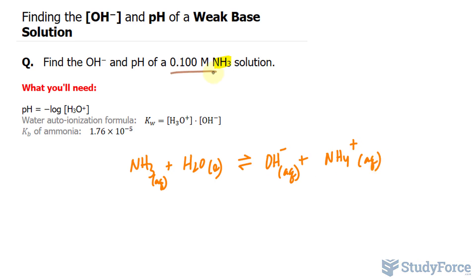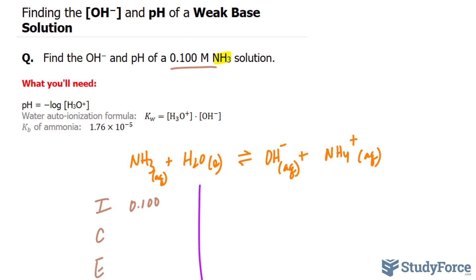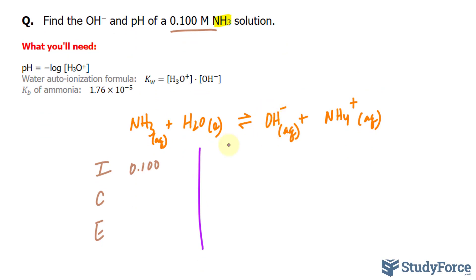We're told the concentration, the initial concentration, is 0.100, and I'll write that as I. I'll create an ICE table, so initial, change, and equilibrium concentration. We don't worry about H2O because it is in its liquid state, so I'll just cross that out. Given that it is a weak base, we're going to have very little OH minus, so I'll write down approximately equal to zero, and NH4 plus is equal to zero initially.